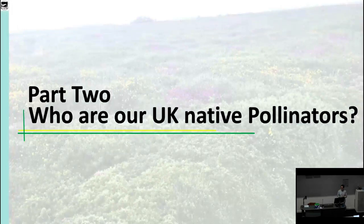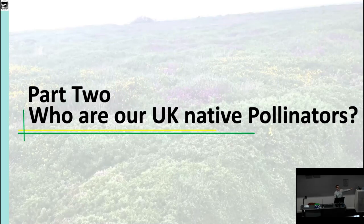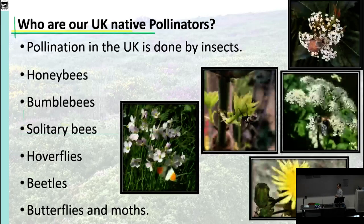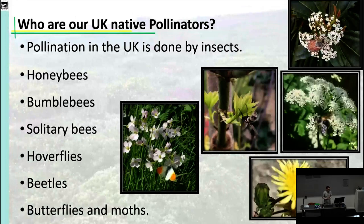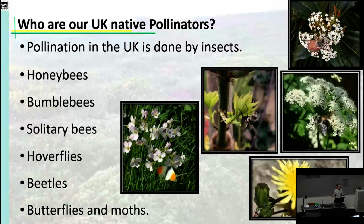Now for the main bulk of the lecture: who are the pollinators? I really want you to walk away today able to identify a bee when you see one. For the UK, pollination is insect-based. There are examples worldwide of other animals that do pollination, but for today: pollination is bees — honeybees, bumblebees, solitary bees. But it's not just bees.